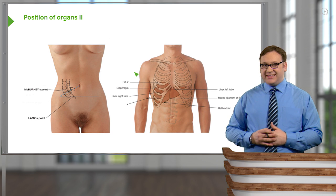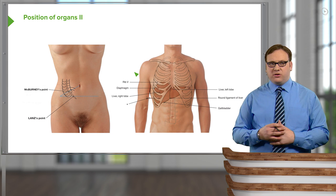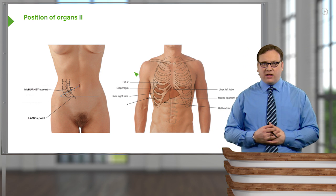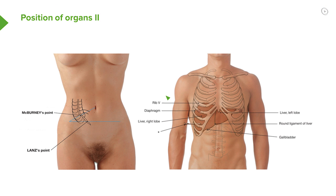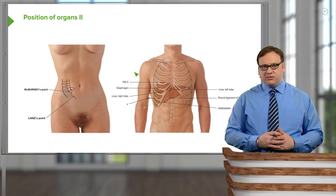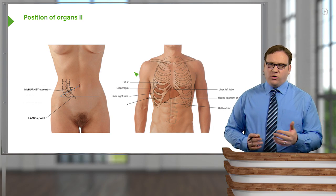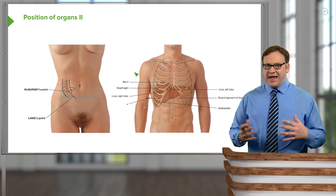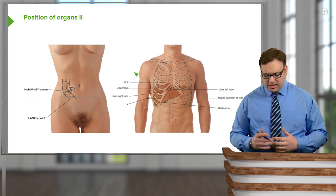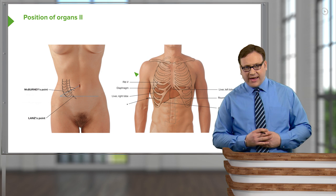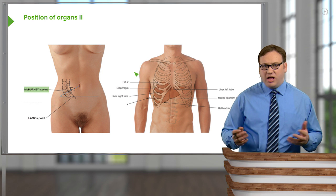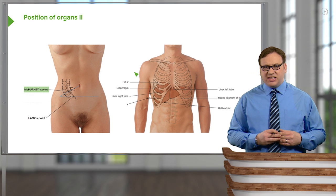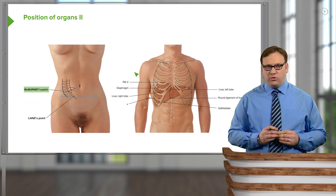Now we can relate the surface landmarks we spoke about previously to a couple of these organs, like the liver and the appendix. Starting with the appendix — this blind pouch located at the beginning of the large intestine by the cecum. This is really important because, as I mentioned before, we may have radiating pain coming from this region. A useful technique for locating this pain is to use what's known as McBurney's Point, which is a surface landmark for the appendix.